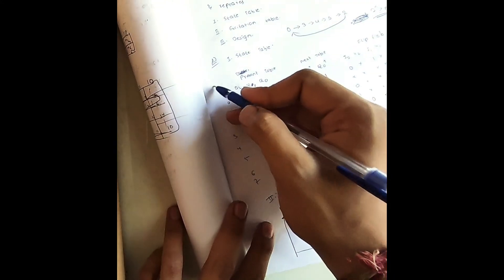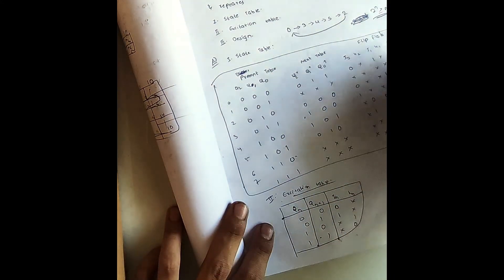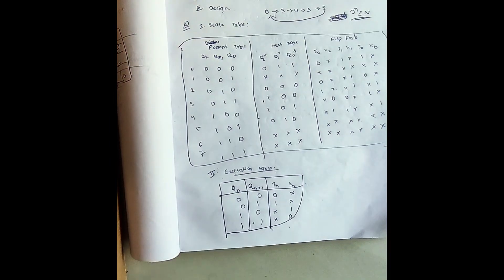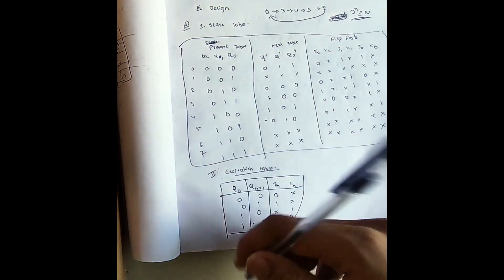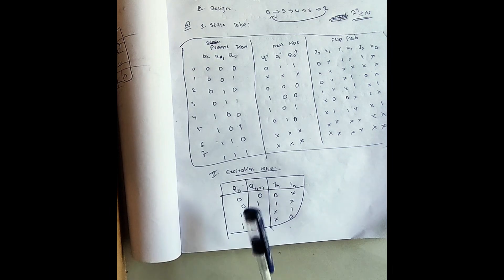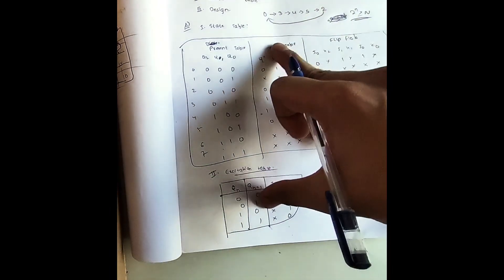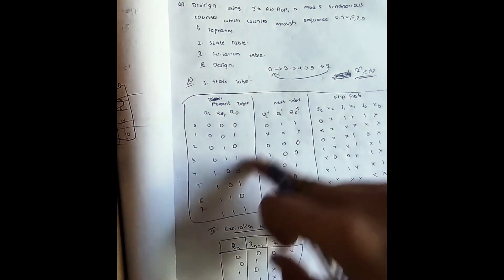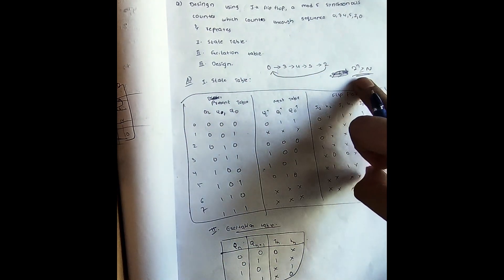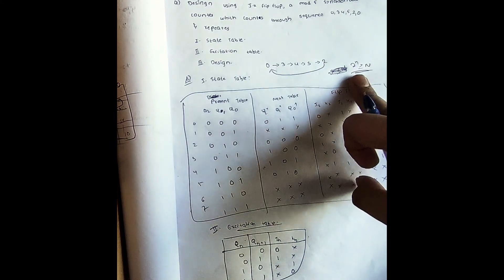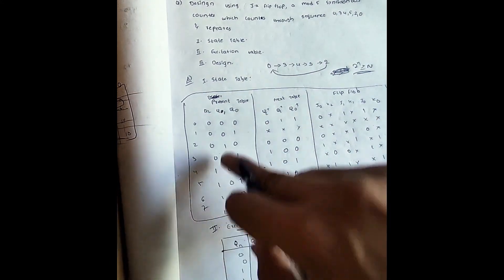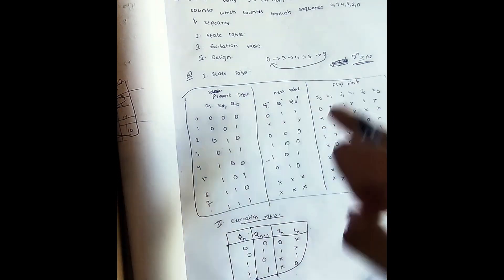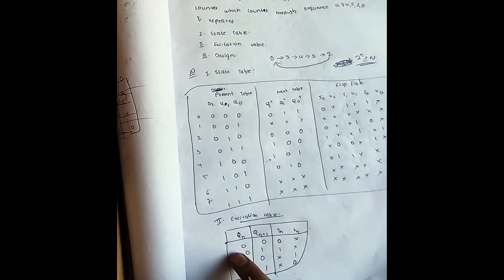So this is the complete state table with present state, next state, and flip-flop columns. This is called the state table and this is the excitation table. The standard excitation table values are: 0 0 → 0 x; 0 1 → 1 x; 1 0 → x 1; 1 1 → x 0. Based on this, we compare Q2 and Q2+ to write J2 K2, and similarly for all flip-flop inputs.